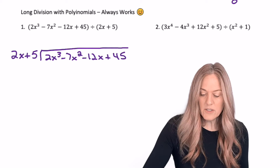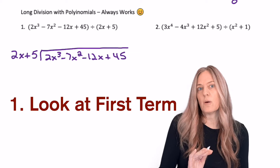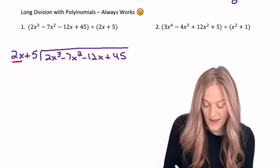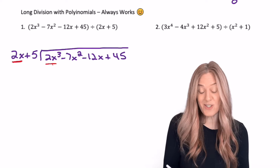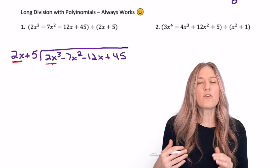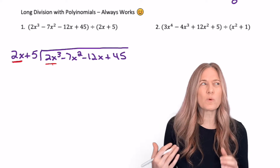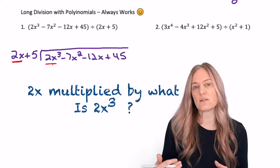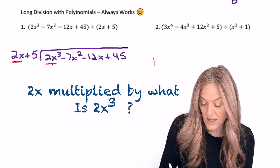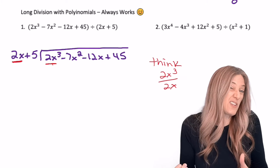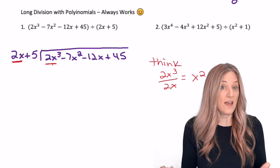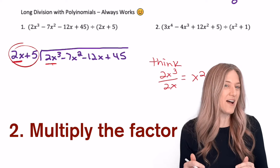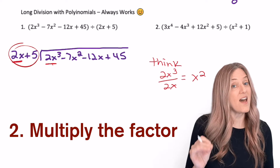We want to look at just the first term of each polynomial. So I have this 2x, and I need to go into 2x cubed. For our purposes, we're really going to think about: 2x times what gives me 2x cubed? Or you can think 2x cubed divided by 2x — x squared. So that means we want to multiply 2x plus 5 by x squared.